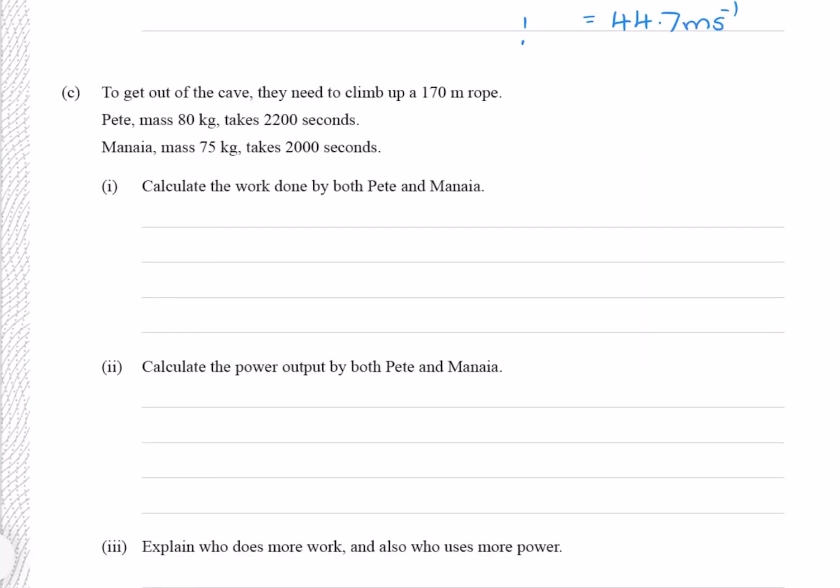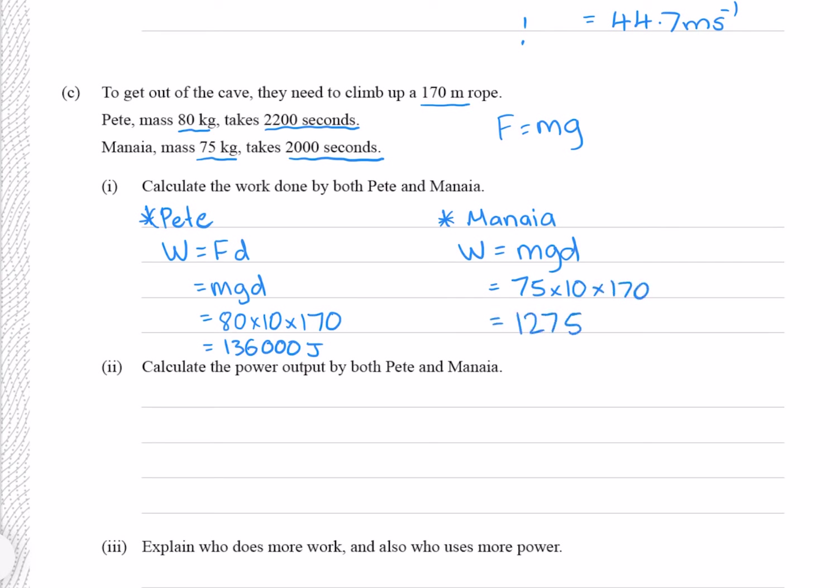Question C: To get out of the cave they need to climb up a 170 meter rope. Pete with a mass of 80 kg takes 2200 seconds. Manaya mass 75 kg takes 2000 seconds. Calculate the work done by both Pete and Manaya. Let's start with Pete. Our equation for work is force times distance, where our force is gravitational and can be found by multiplying their mass by the acceleration due to gravity. So we substitute mg for F. Putting our numbers in gives me 136,000 joules. Let's do the same for Manaya. Our work is mgd as we found earlier. Using her mass instead of Pete's gives me 127,500 joules.